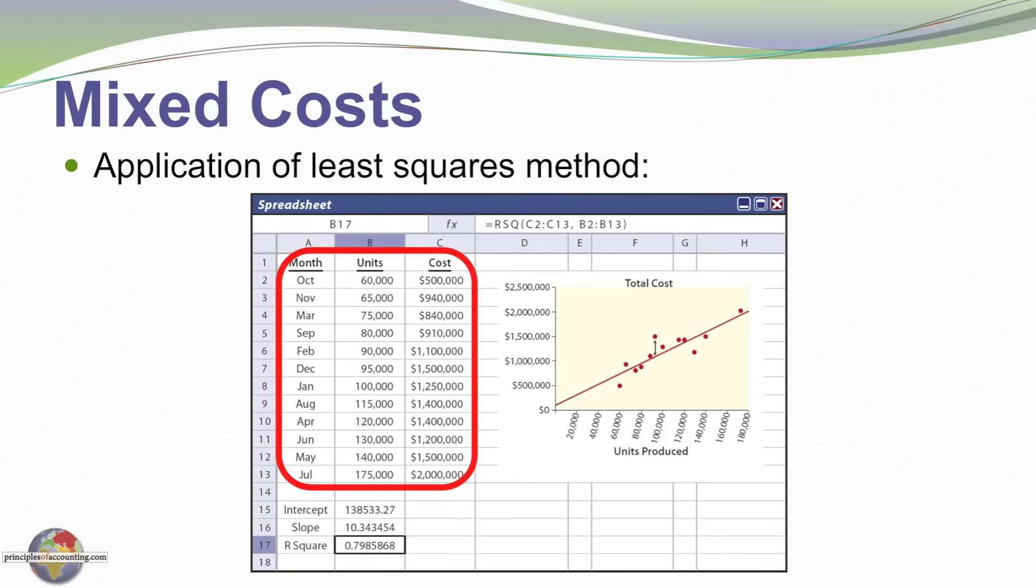And so let's look at how the least squares method would work in this particular case. We have monthly data, we have units and we have total costs. So that's our data set. We've run a regression analysis using the spreadsheet software to determine that the intercept is $138,533 and the slope is 10.34. This suggests that for this business, for this cost for this business, that the fixed cost is $138,000 and the variable cost is $10 per unit.